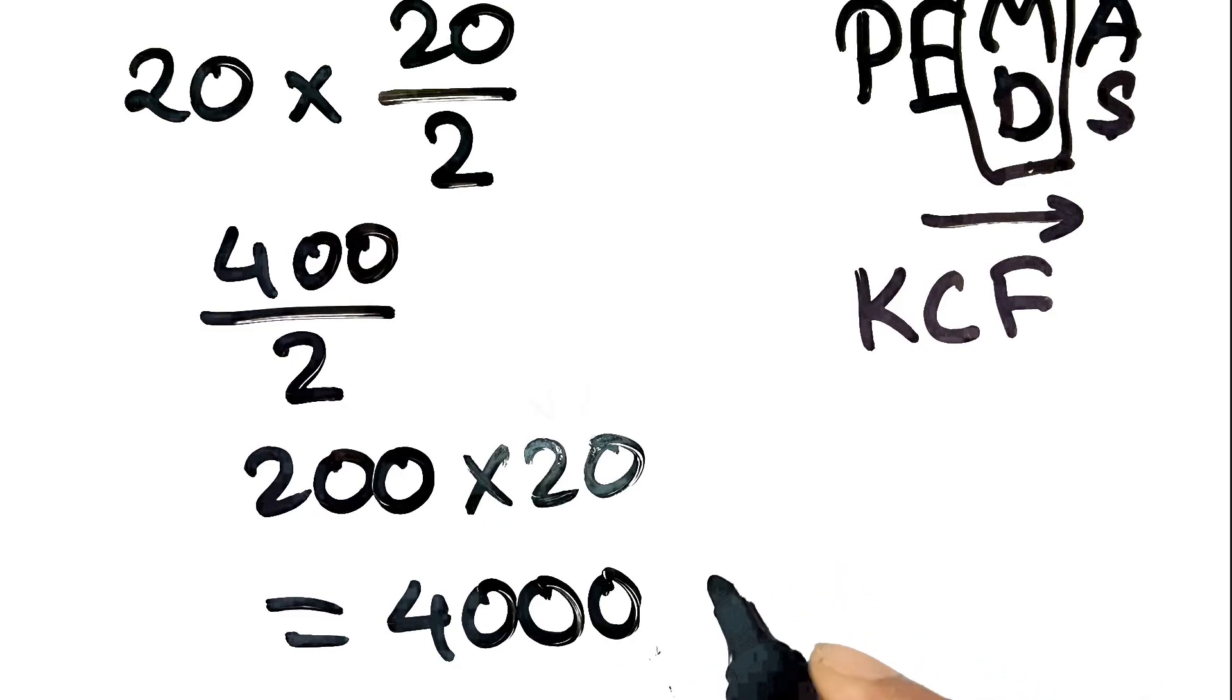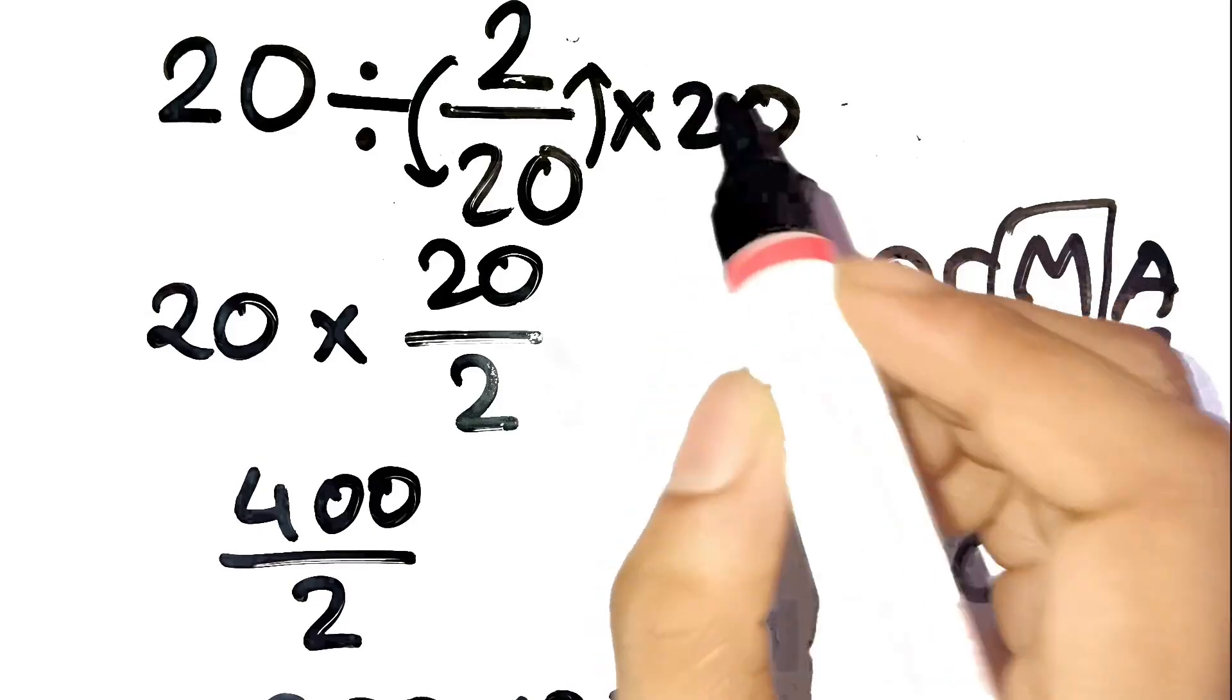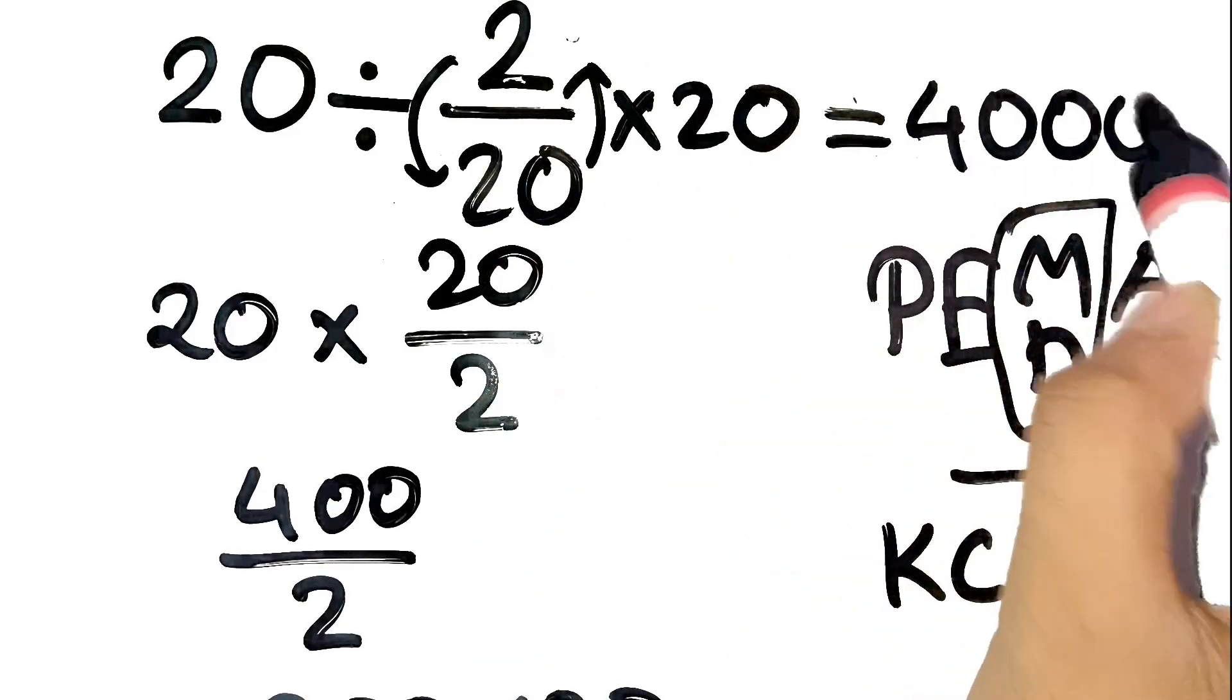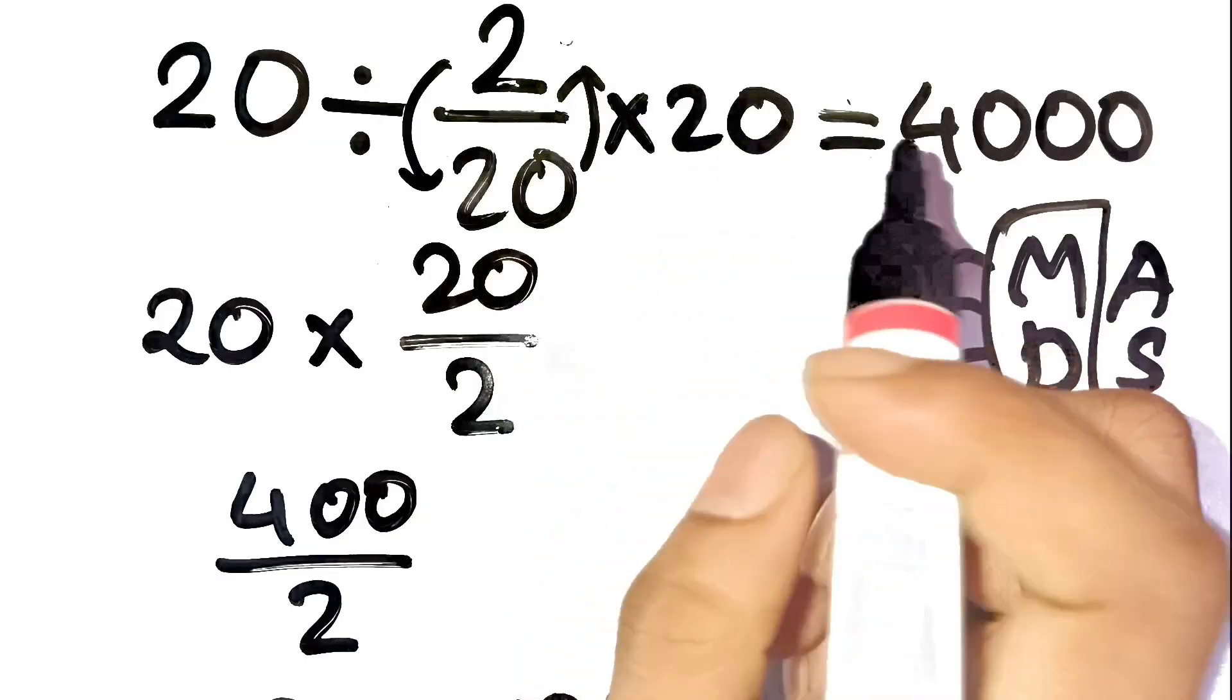Crazy, right? Just a little misstep with the fraction, and suddenly the answer skyrockets. This is why understanding division with fractions is so important. It's easy to misread and assume things cancel when they don't.